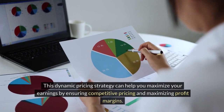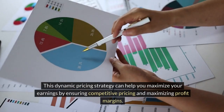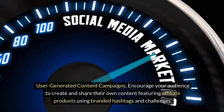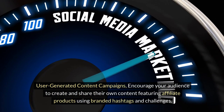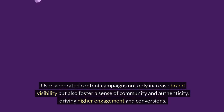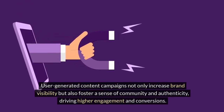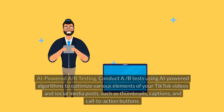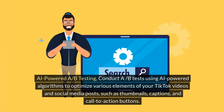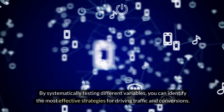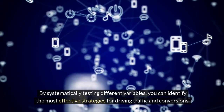This dynamic pricing strategy can help you maximize earnings by ensuring competitive pricing and maximizing profit margins. User-generated content campaigns. Encourage your audience to create and share their own content featuring affiliate products using branded hashtags and challenges. User-generated content campaigns not only increase brand visibility, but also foster a sense of community and authenticity, driving higher engagement and conversions. Conduct A/B tests using AI-powered algorithms to optimize various elements of your TikTok videos, such as thumbnails, captions, and call-to-action buttons, to identify the most effective strategies for driving traffic and conversions.